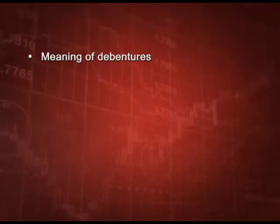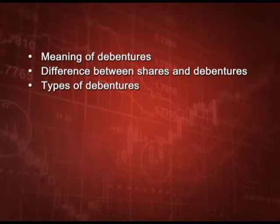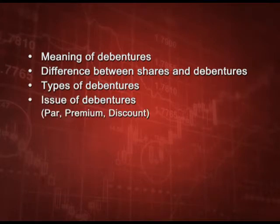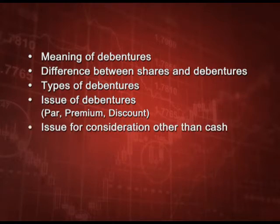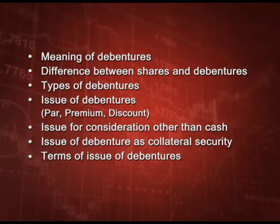What we are going to study in this chapter: first, we will understand the meaning of debentures and the difference between shares and debentures, the types of debentures, how we issue debentures at par, premium, and discount, how to issue debentures for consideration other than cash, what is meant by debenture issue as collateral security, and the terms of issue. We will follow this with redemption in the next class.